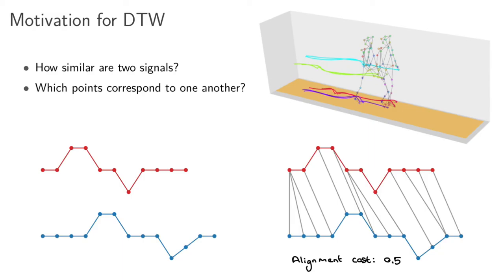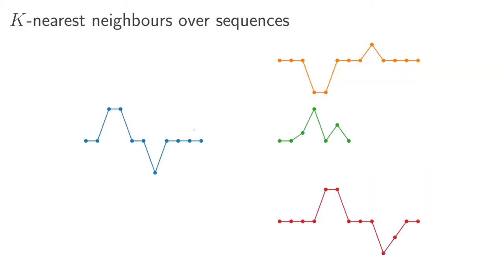So when you're doing k-nearest neighbors, what you often want to do is compare two data items to one another. If both items have the same dimensionality and the same number of points, you can use cosine distance or Euclidean distance. But for sequences or signals where the number of points can be different, you need some other approach. The naive approach compares things point by point, but dynamic time warping gives you a more principled way of comparing two signals and tells you how costly it is to align one to the other.